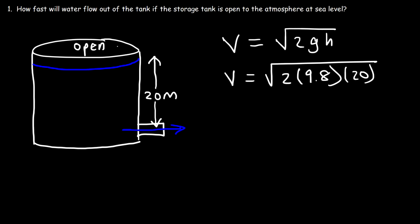I will explain why using Bernoulli's equation shortly. So 2 times 9.8 times 20 is 392, and then we take the square root of that result. So the speed of the water as it leaves the tank is 19.8 meters per second.